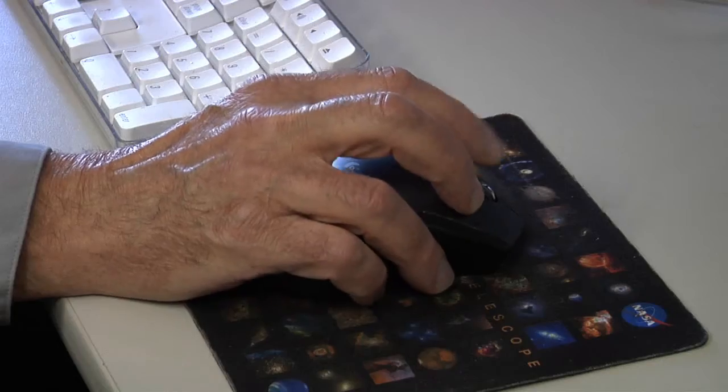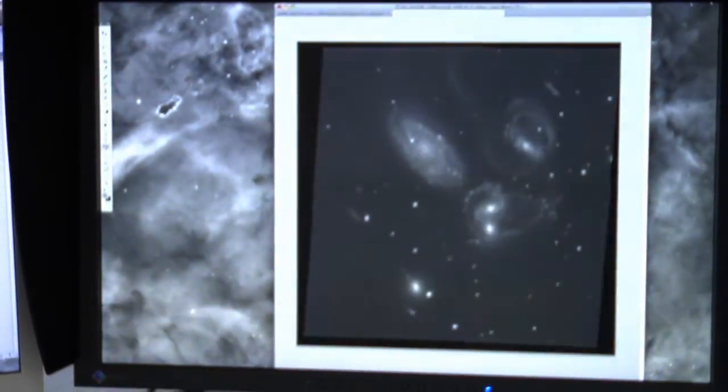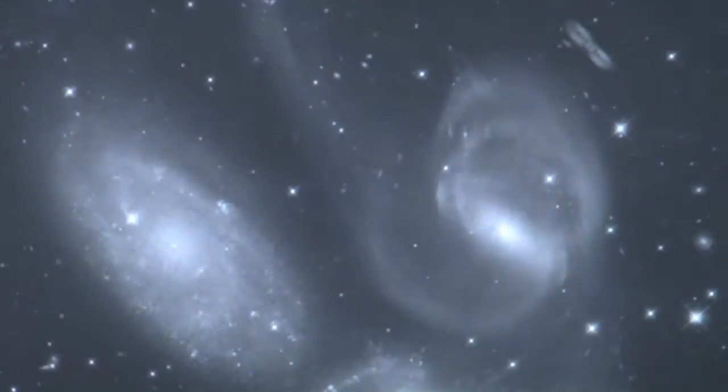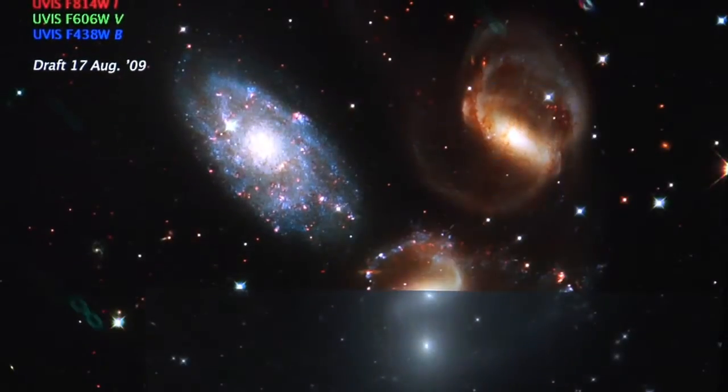One of my primary tasks with the Hubble project is to produce color images from Hubble Space Telescope data. Cameras on the Hubble are black and white cameras, they don't produce color pictures, so we take that data that's intended for scientific analysis and produce photographs from those data.